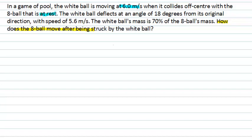After the collision, we know the motion of the white ball — it's changed its direction and is now moving at a different speed. The last piece of information we have is something about the relative mass of the two objects. To begin with, it's useful to draw a diagram to see what the physical situation actually looks like.